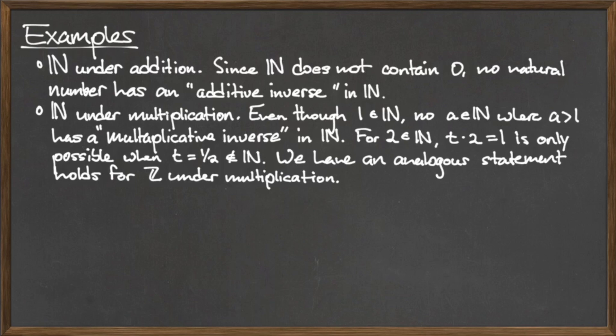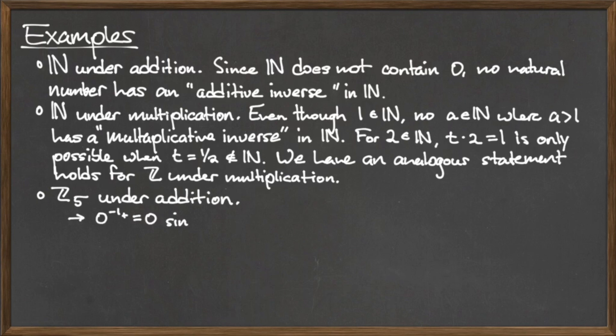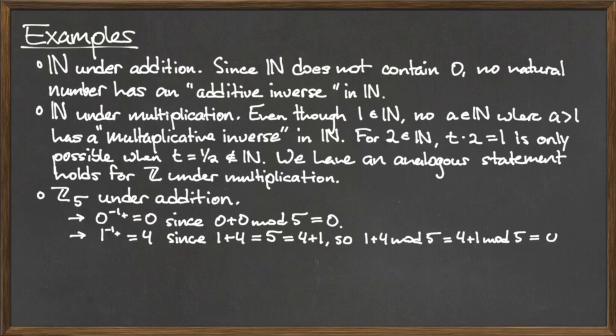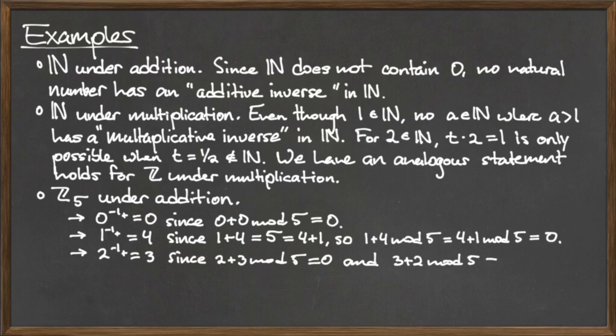Now consider the set Z mod 5 under the operation of addition. The additive identity is the element 0, and 0 is included in the set Z mod 5. Since Z mod 5 does contain an identity element with respect to addition, additive inverses may exist for the elements of Z mod 5. In fact, every element of Z mod 5 has an additive inverse. The additive inverse of 0 is itself, the additive inverse of 1 is 4 and vice versa, and the additive inverse of 2 is 3 and vice versa.